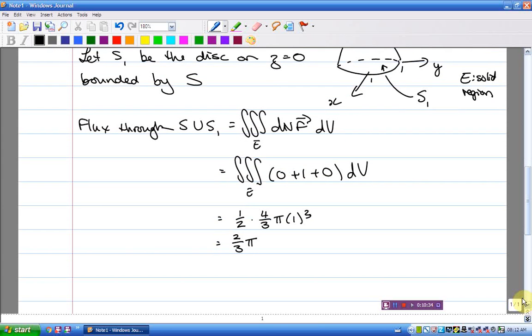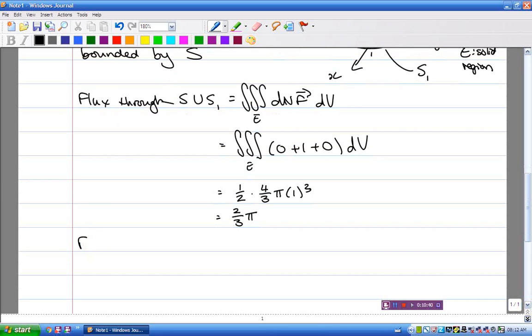But of course the flux through S union S1 is not what we want. We're wanting the flux just through S. So the flux through S is equal to the total flux minus the flux through S1, and that I'm going to have to work out with a surface integral. There's no way to avoid it.